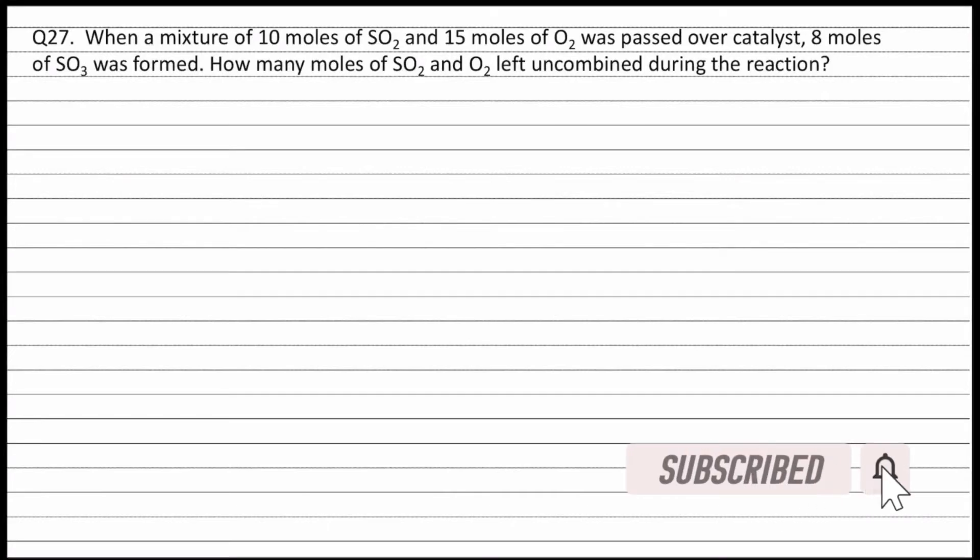Question 27. When a mixture of 10 moles of sulfur dioxide and 15 moles of oxygen was passed over catalyst, 8 moles of sulfur trioxide was formed. How many moles of sulfur dioxide and oxygen left uncombined during the reaction?